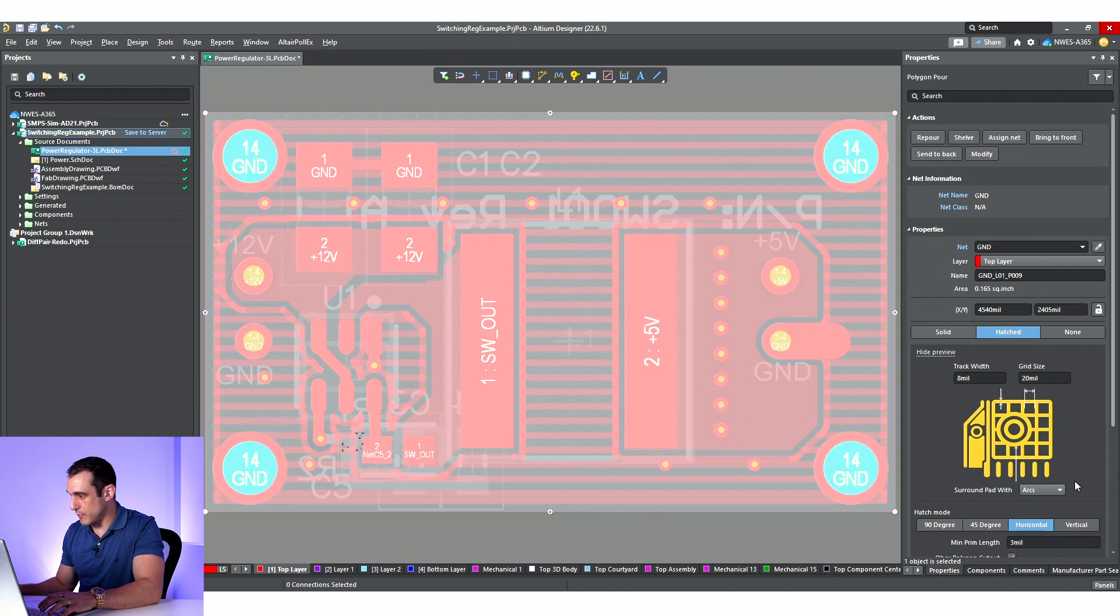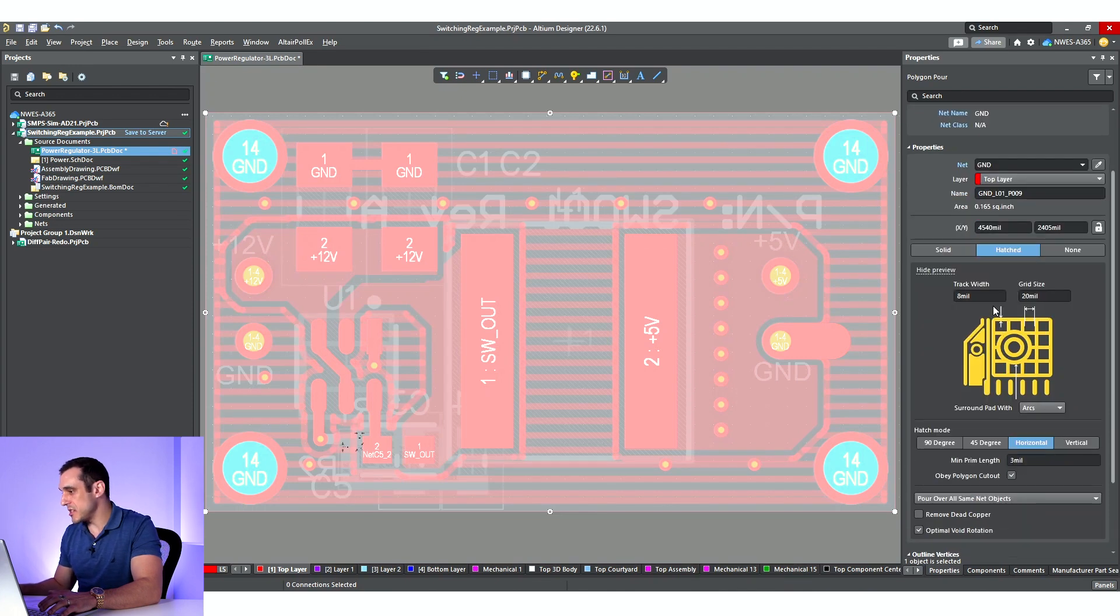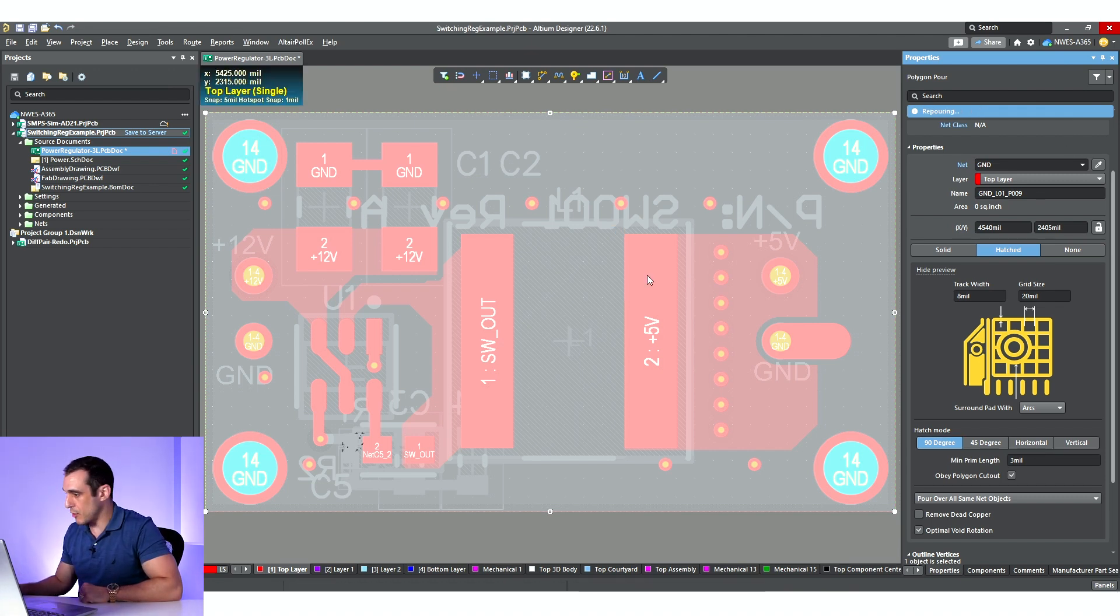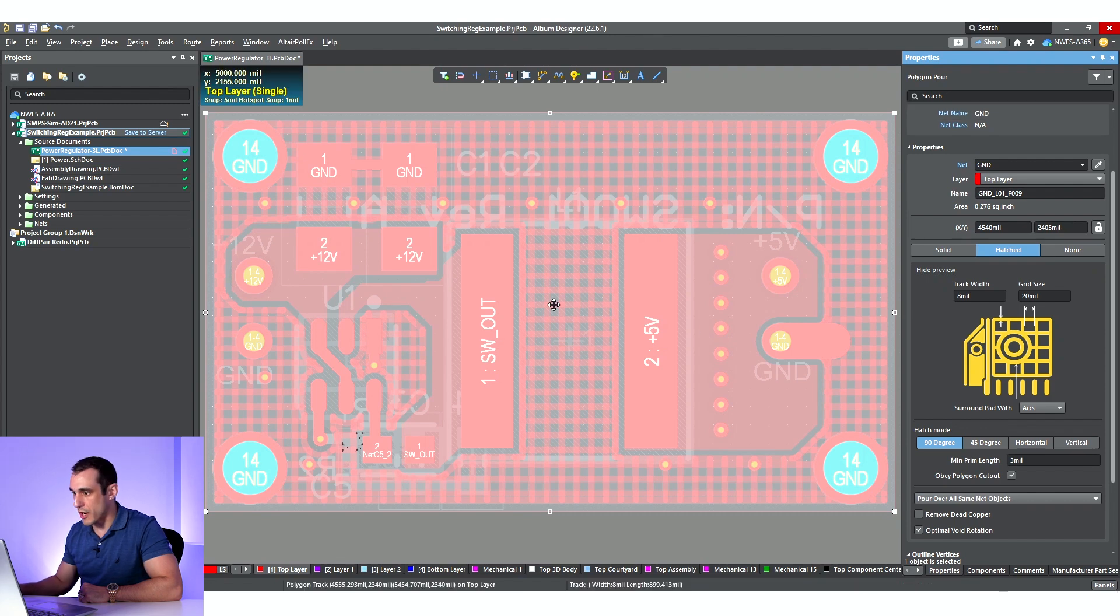One thing you can do is once you've set it to hatched, you'll see some of these configuration options come up in the properties panel. So I can change the track width. I can change the grid size. I can make them run at 90 degree angles to each other so that they cross over each other in a square pattern. And then, you know, if you change one of those, just hit re-pour, it comes back. I can do it at a 45 degree angle, vertical, whatever you want to do.